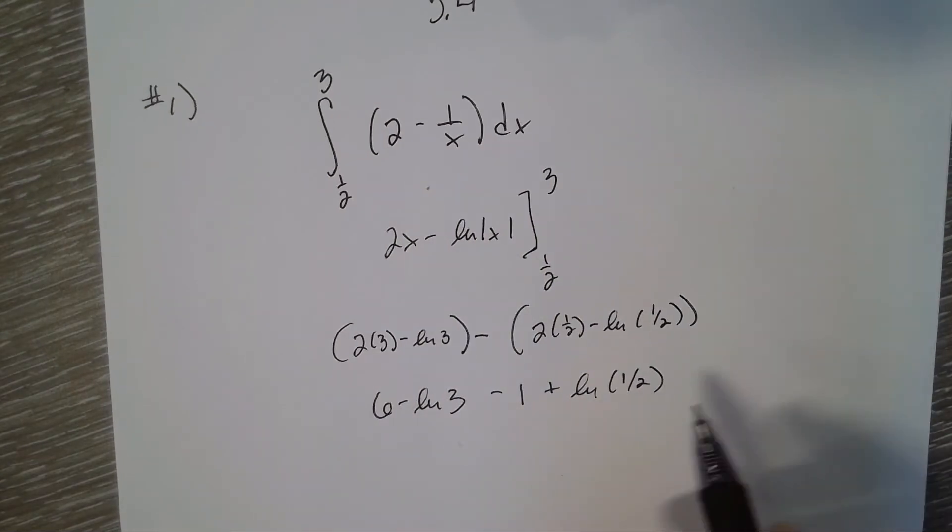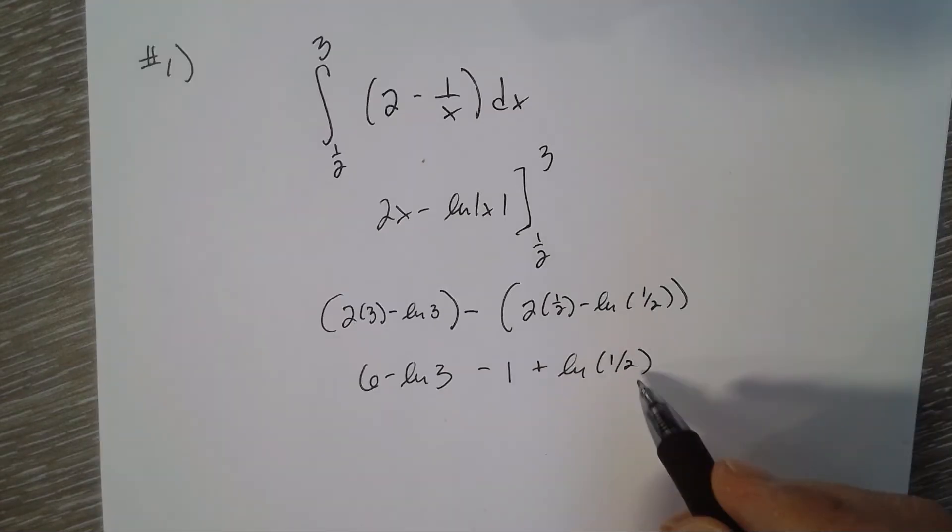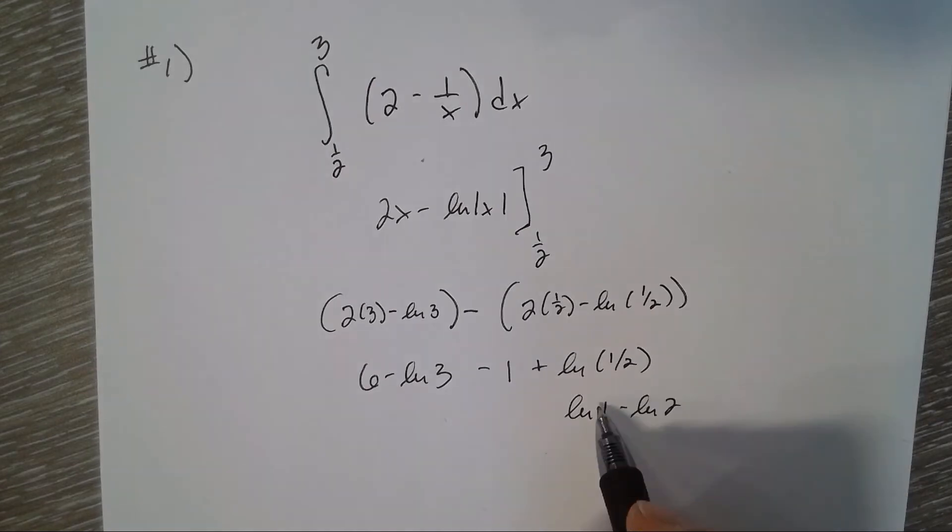One of our properties of logs is that natural log of 1/2 equals natural log of 1 minus natural log of 2. And natural log of 1, regardless of the base, is always 0. So we have 5 minus natural log of 3 minus natural log of 2.